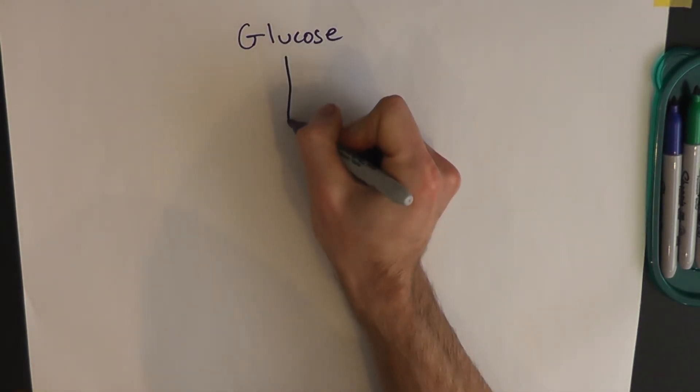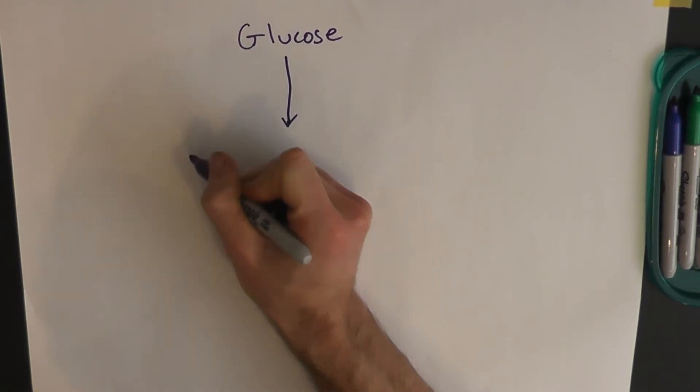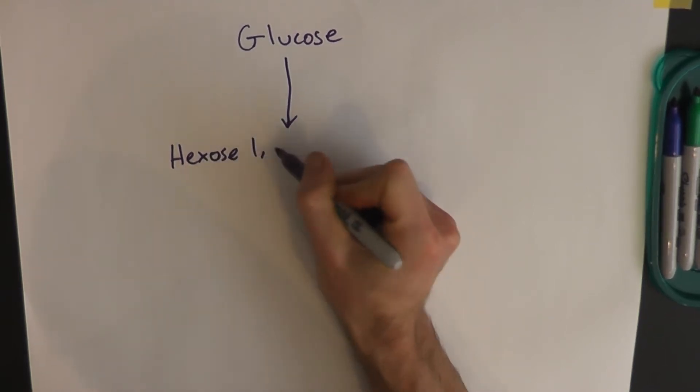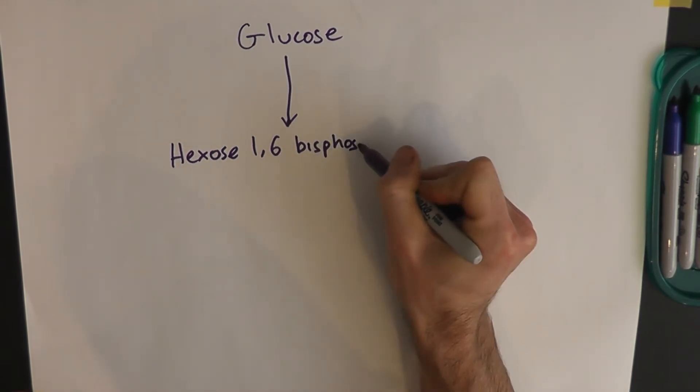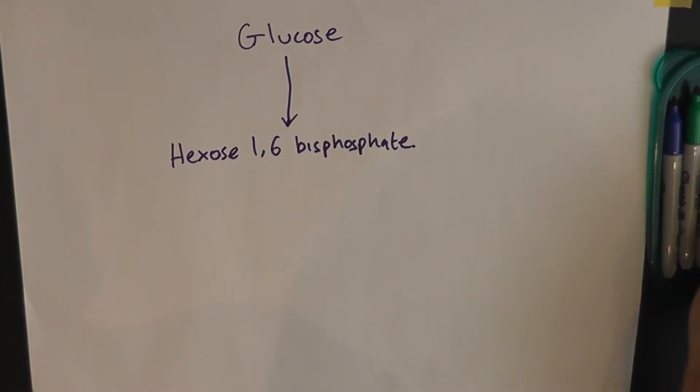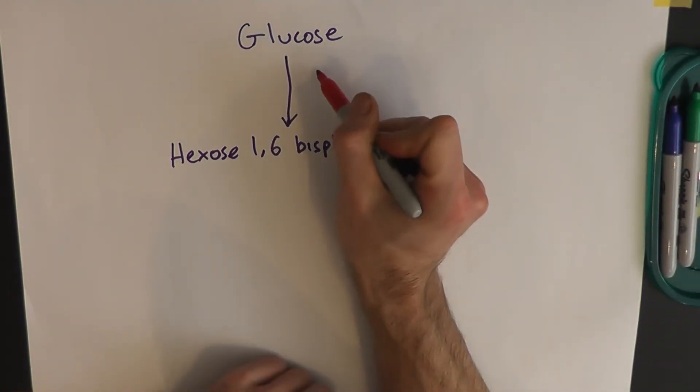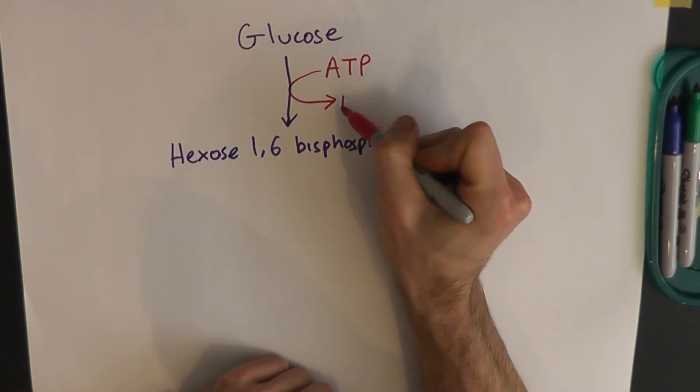But before we do that, we have to phosphorylate glucose to make it a bit unstable. And when we add phosphate to glucose, it becomes something called hexose 1,6-bisphosphate. Or as we know it, ATP.